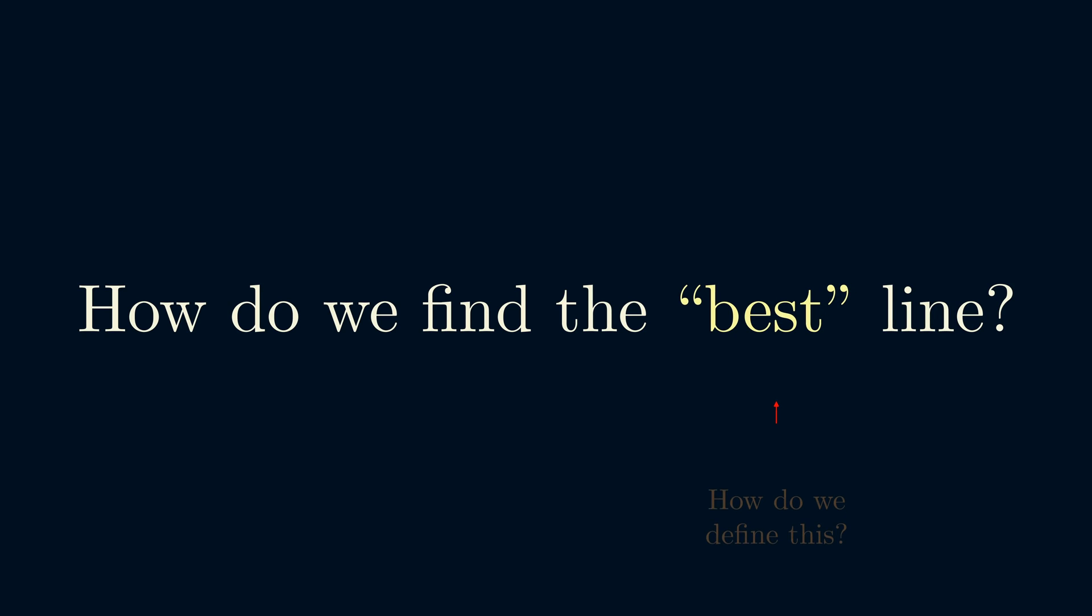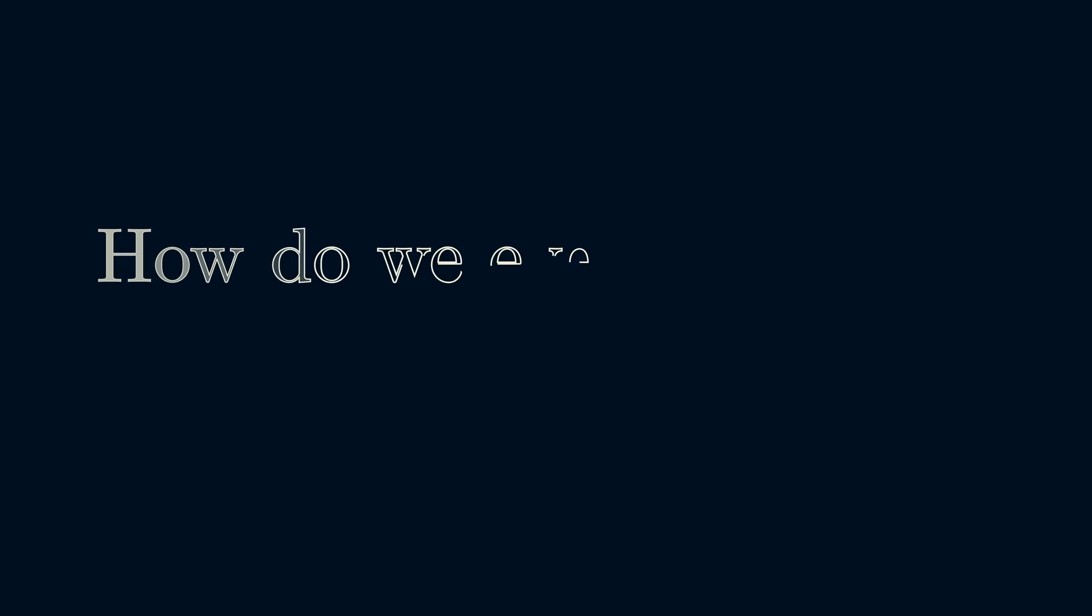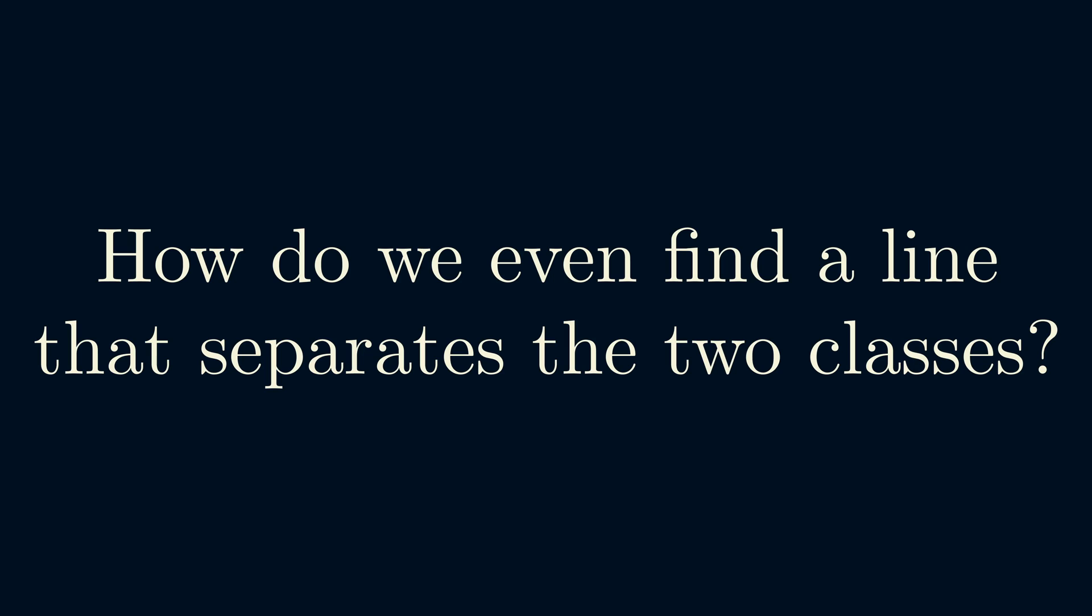So given all of the lines possible, how do we find the best line? And how do we define what best even means? Actually, taking a step back, how do we even find a line that separates the two classes?